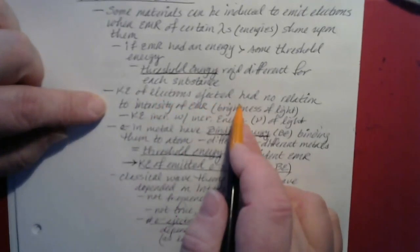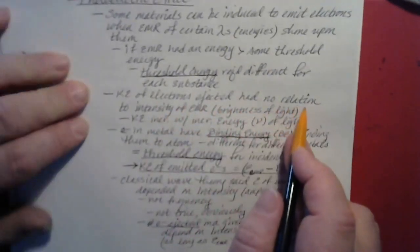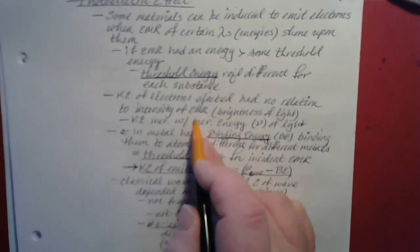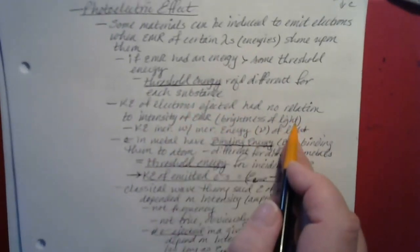The kinetic energy of the electrons being ejected — because once ejected, they move with a certain speed, and electrons have mass — is one-half the mass of the electron times the velocity squared. It was found that kinetic energy has no relation to the intensity of the electromagnetic radiation causing the emission. The kinetic energy of the electrons does, however, increase with increasing energy or frequency of the electromagnetic radiation shining on the substance.